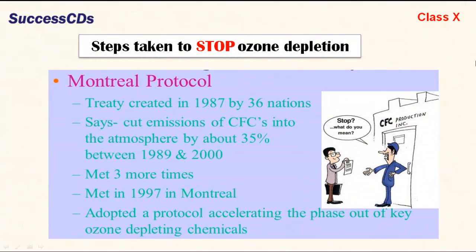What are the steps taken to stop ozone depletion? The Montreal Protocol is a treaty created in 1987 by 36 nations. It requires cutting emissions of chlorofluorocarbons into the atmosphere by about 35% between 1989 and 2000.